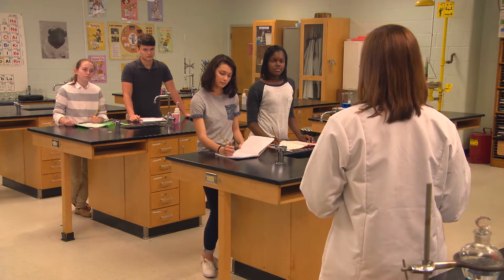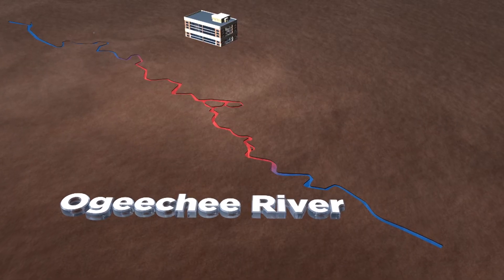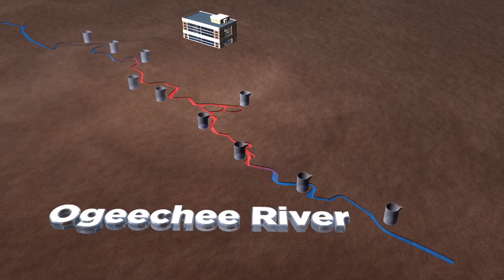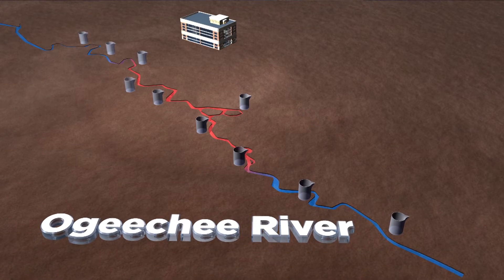Now that you've identified the manipulated variable and the responding variable, all other factors in the experiment should be constants. It's very important that you control all of these factors so that they're the same for all parts of the experiment. That's why constants are sometimes known as controlled variables. For example, you've decided to collect samples that are one kilometer away from each other — that's a constant in your experiment. Now let's see if we can identify three more constants.